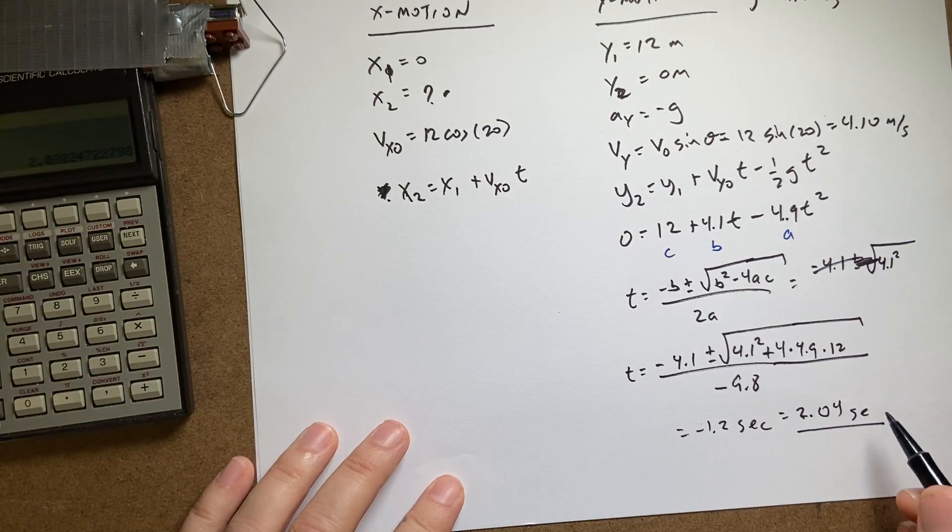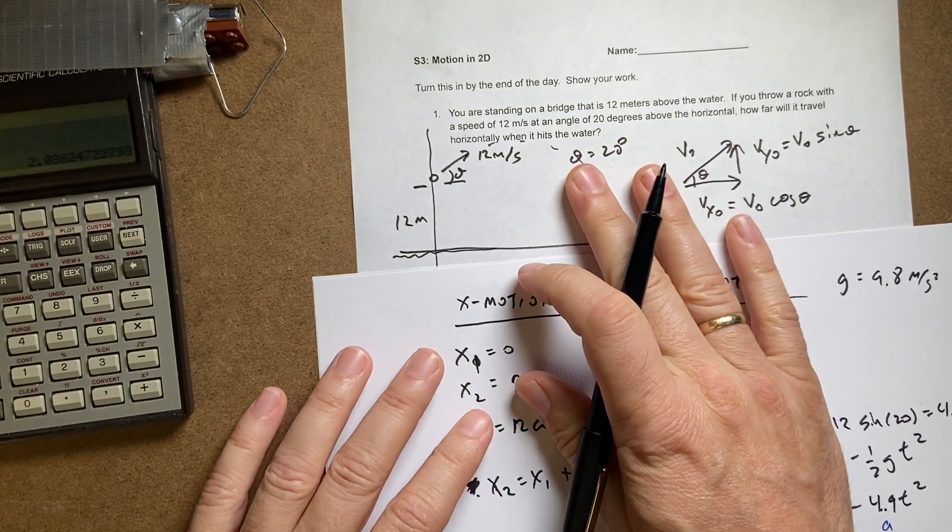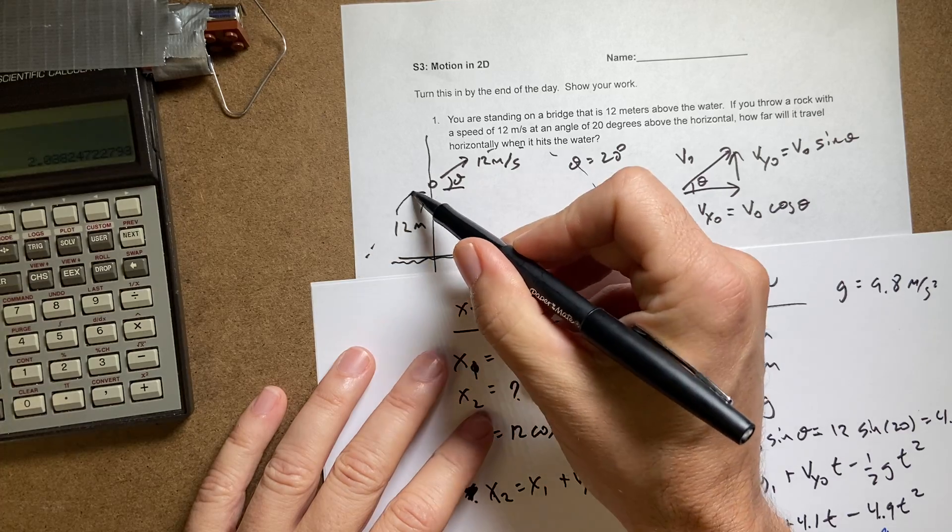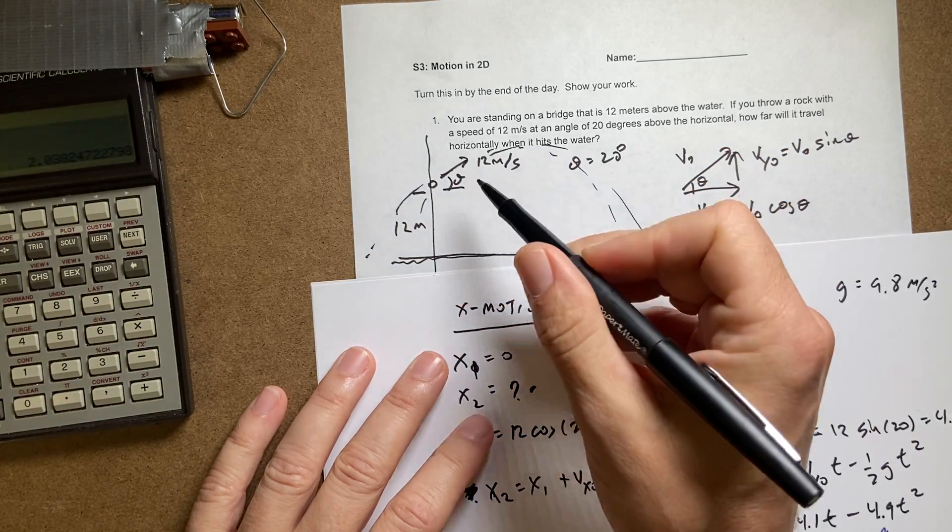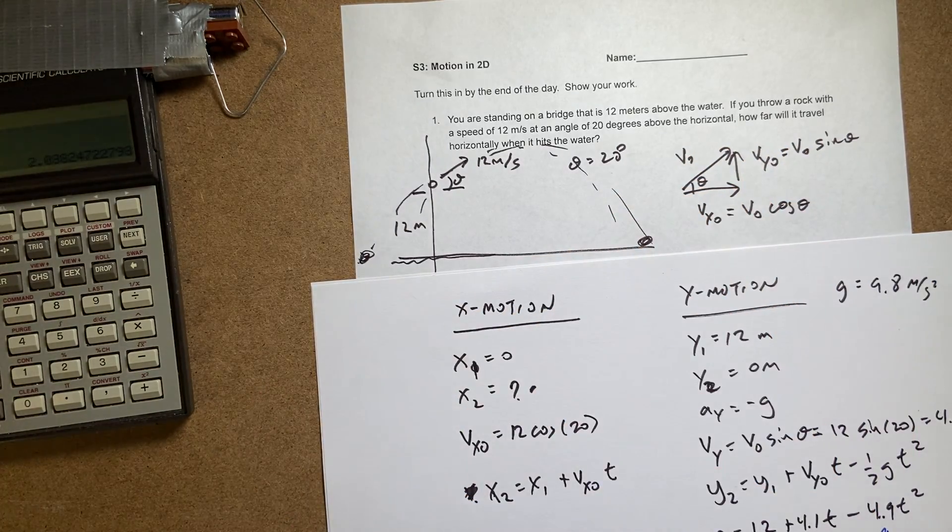That's my time I'm going to use. And just so you know, that negative time, this is a parabola. Here's one time and the other time goes back in time. If it went back in time that's where it would have started.